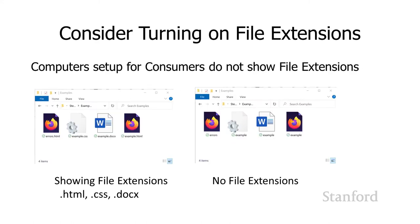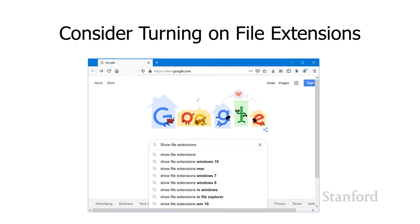You should also consider turning on file extensions display in your operating system. Computers set up for consumers don't show file extensions — things like .txt, .html, .doc, .pdf — which go on the ends of files and indicate what type of file it is. This will get a bit confusing when working with web pages and programming. I do recommend you turn on file extensions. On the left in my images the extensions are on, and on the right they are off. Even though several files appear to have the same name, they're different because they have different extensions. I recommend you Google how to turn them on, since it differs between operating systems.